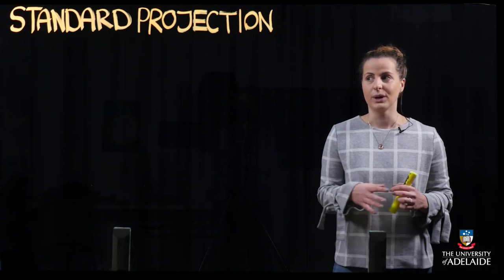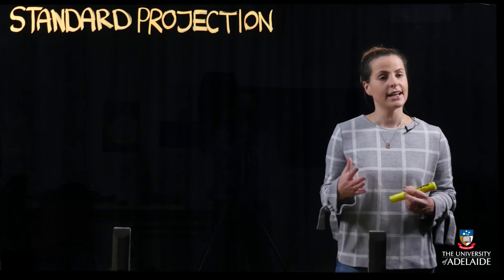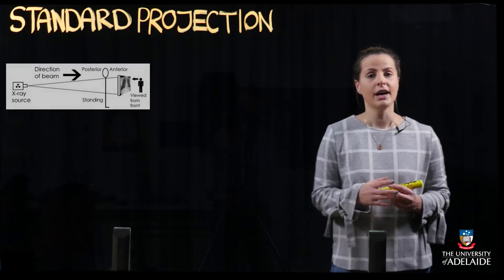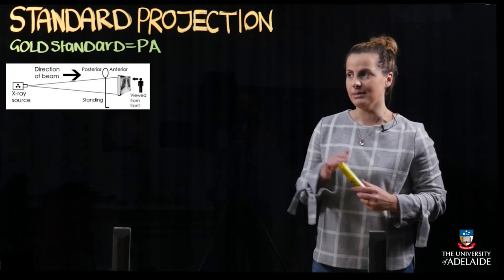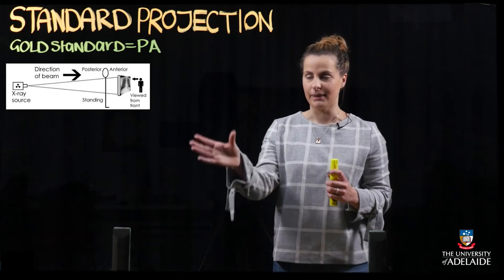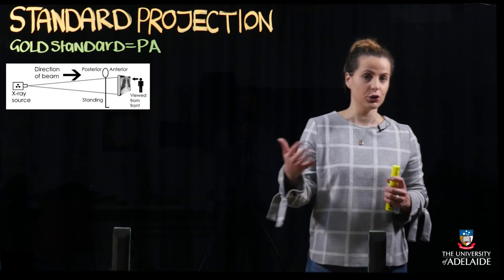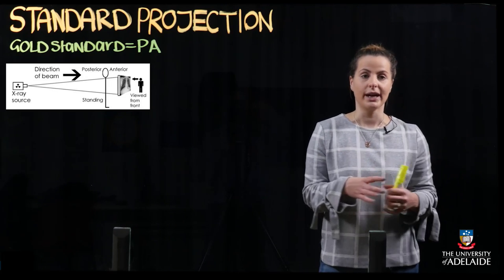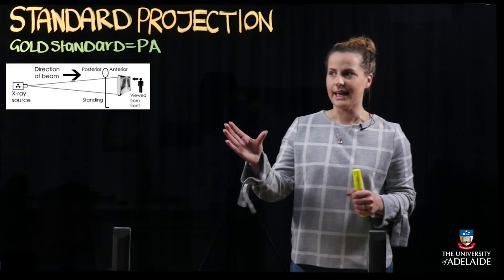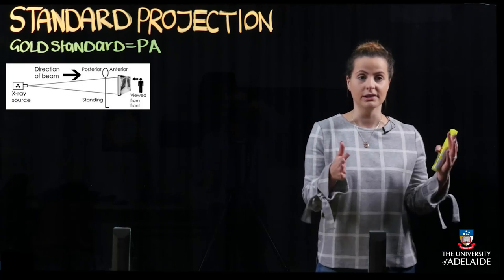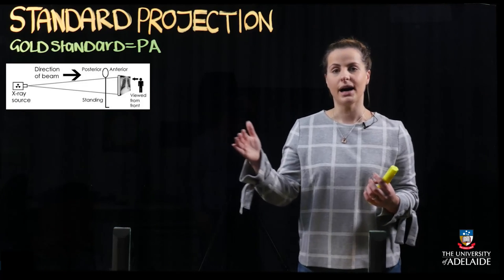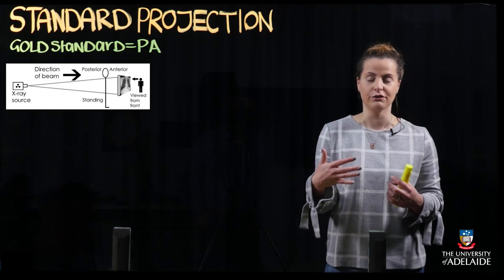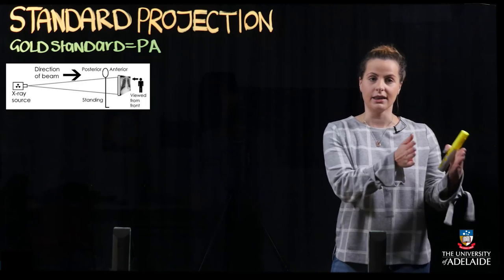Firstly we're going to start off with the standard projection of a chest x-ray. The standard projection, as demonstrated on the image above, is going to be a posterior-anterior projection. You have an x-ray source and an x-ray beam which penetrates your patient or particular structures, and then a film detector which captures the wavelengths that are absorbed. In a PA it is referring to the directionality that a beam is passing through your patient — specifically passing from the posterior aspect first and then through the anterior, hitting the film detector.